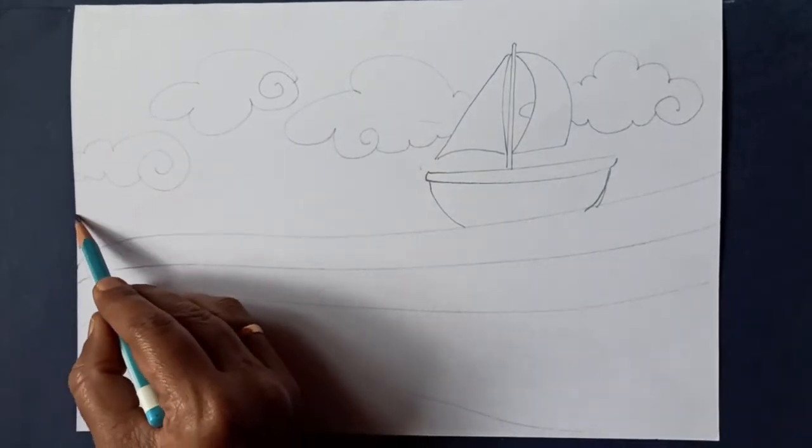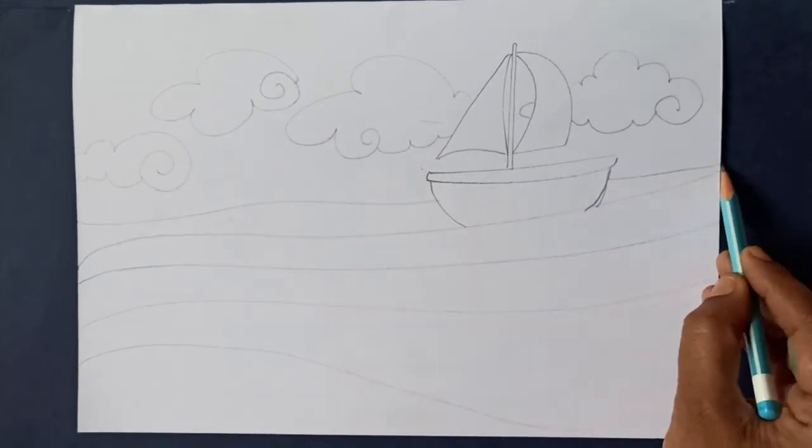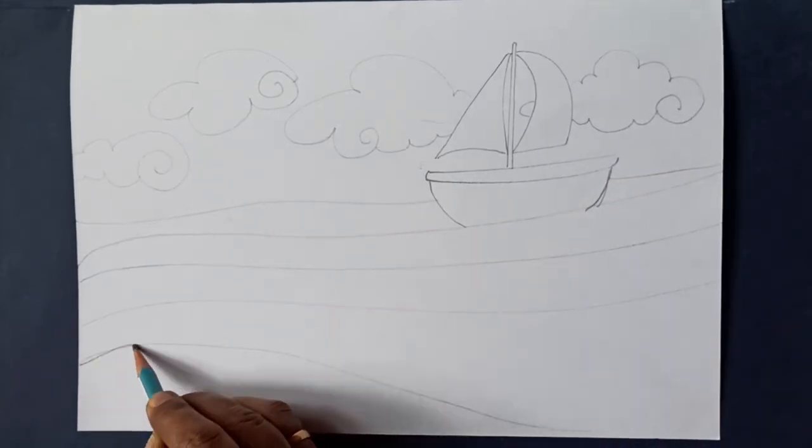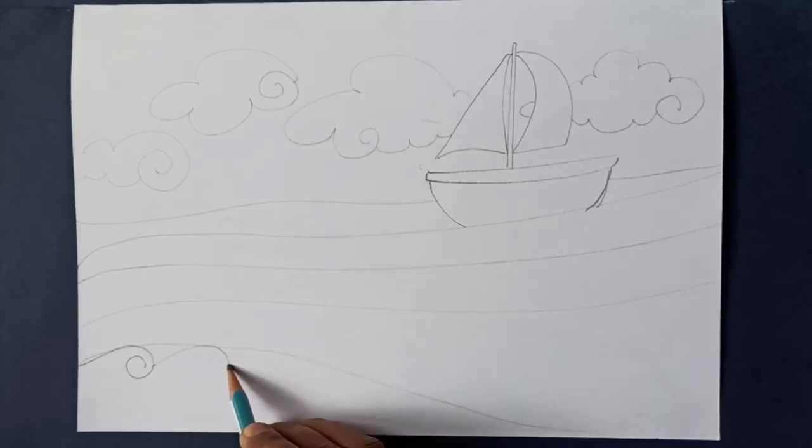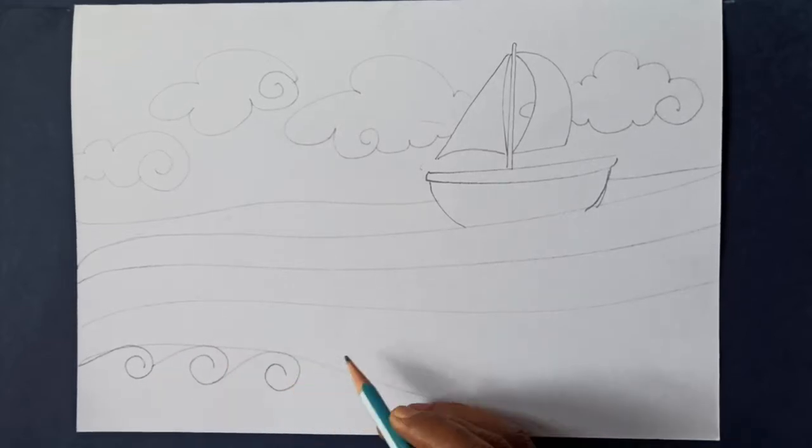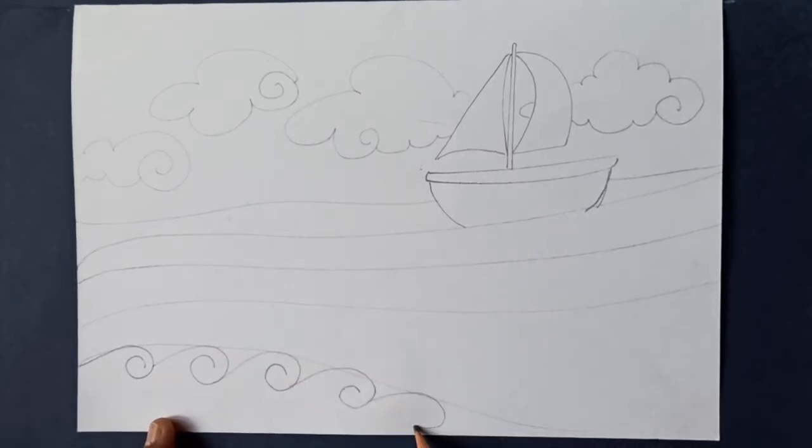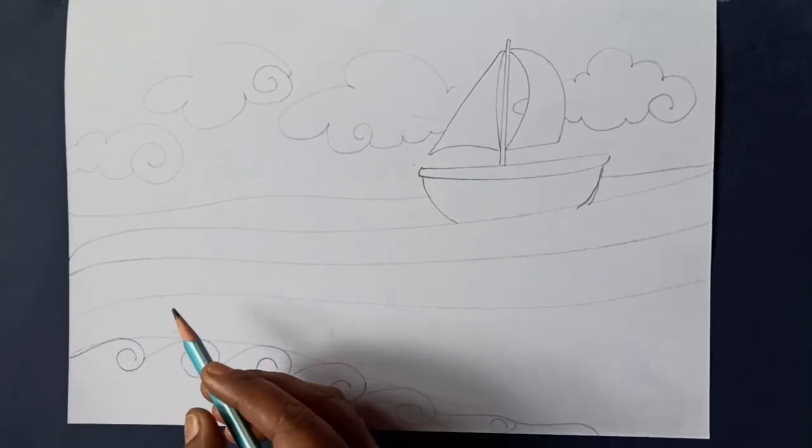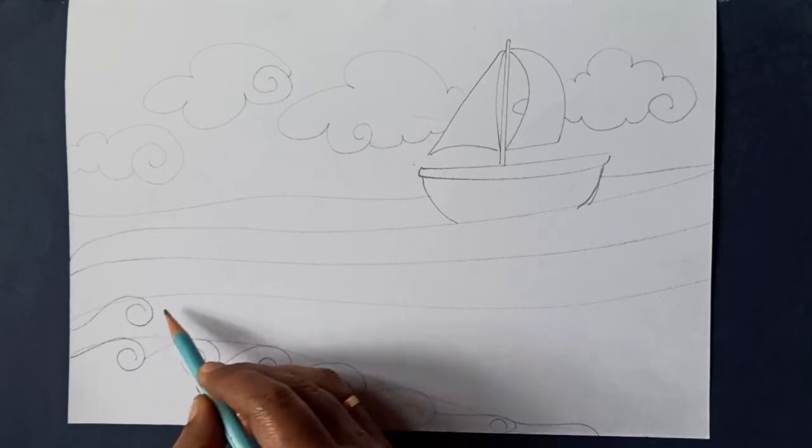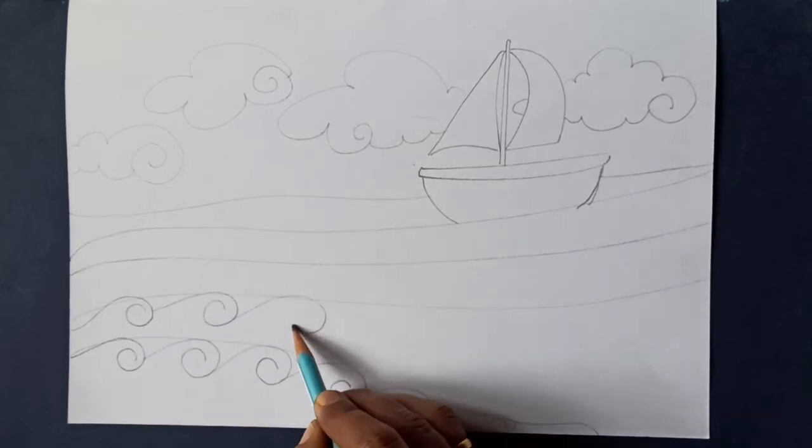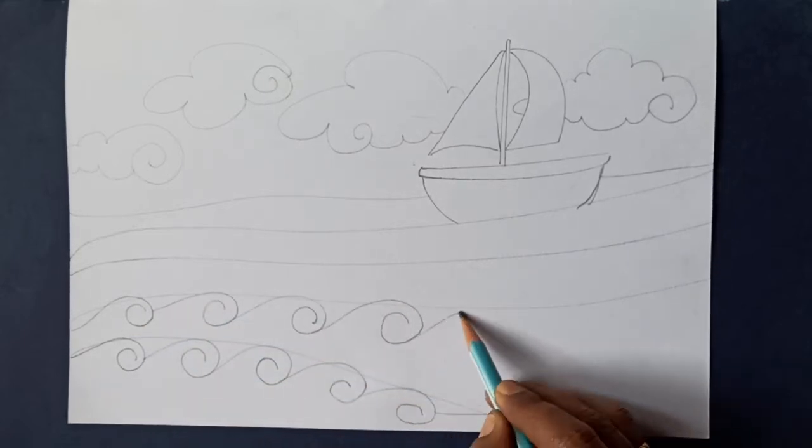Draw a wave line behind the boat. Let's decorate the waves. Now draw a line and make a spiral shape. Connect the spiral lines as shown here. Do the same for the other lines.